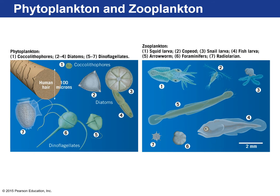Examples of phytoplankton include coccolithophores — the smallest, making their shells out of calcium carbonate — and diatoms, which have over 6,000 species and make their shells out of silica. Diatoms are largely responsible for the oxygen in our atmosphere. There are also dinoflagellates with whip-like tails, sometimes with shells of cellulose or silica. Zooplankton include squid larvae, copepods, snail larvae, fish larvae, foraminifera, arrow worms, and radiolarians — they float around and eat the autotrophs.